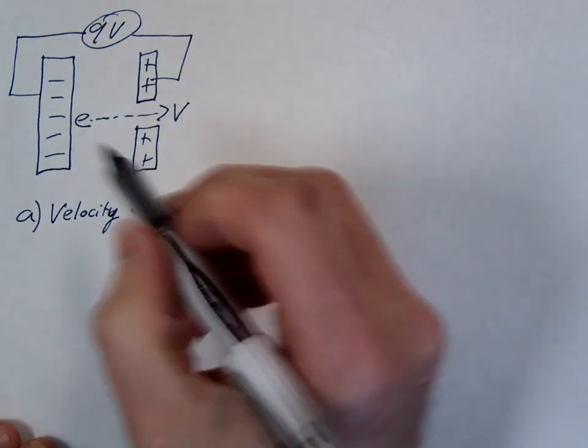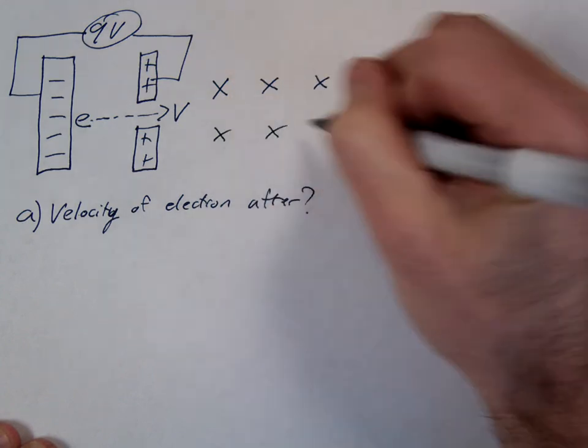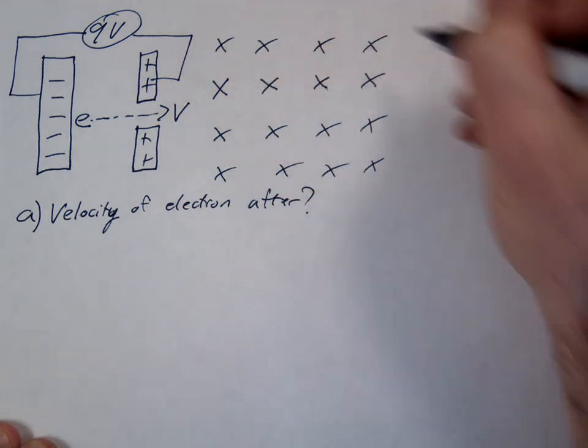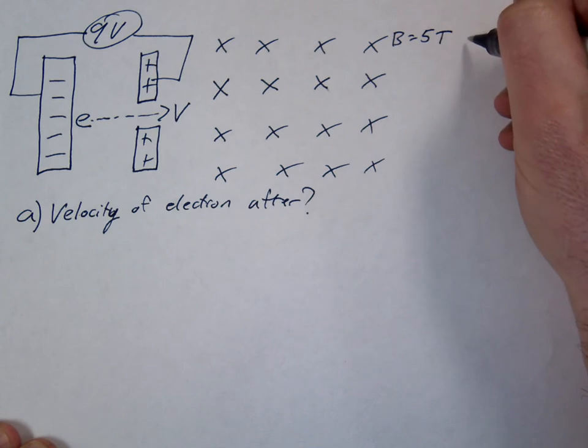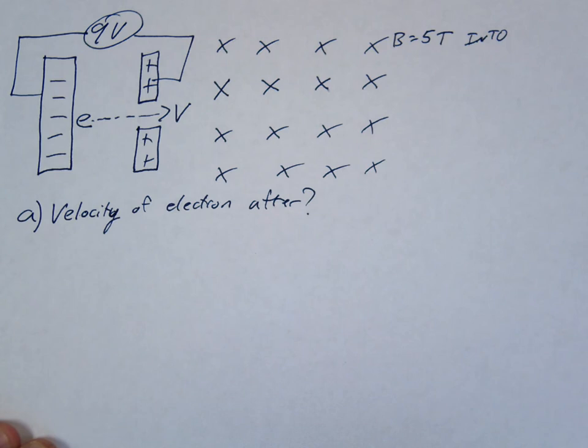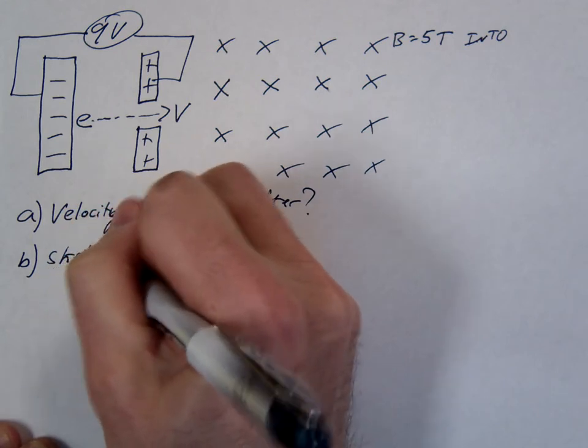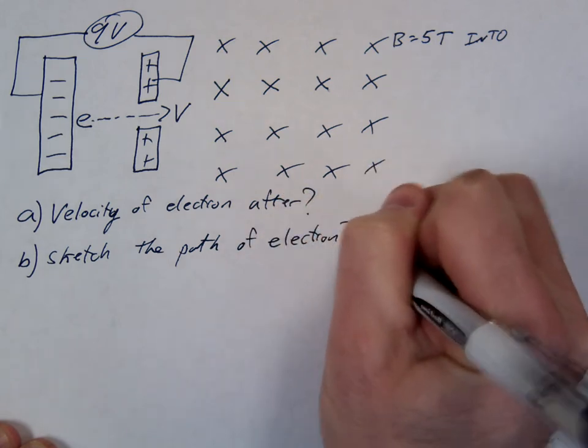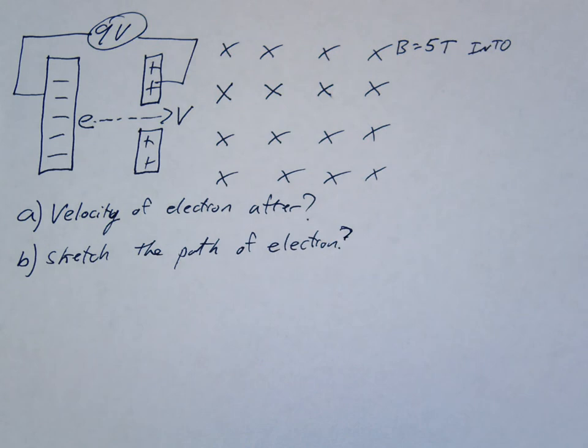Question B, our electron's now going to enter a magnetic field. Let's exit this time. We'll say our B field looks like this, which means what's the direction of our B field? Into. Let's say it's 5 tesla into. Letter B, can you sketch the path of the electron? In other words, use your right-hand rule. Use your right-hand rule to sketch it out. Figure out the direction of the force. See how it's going to curve through it.